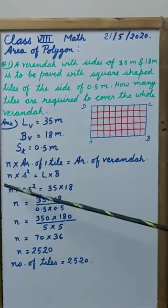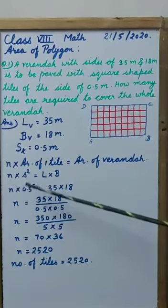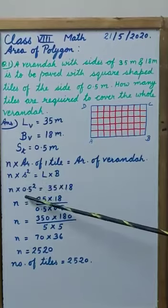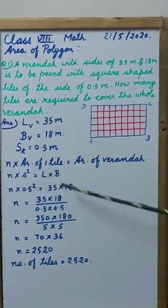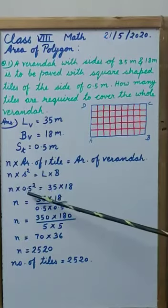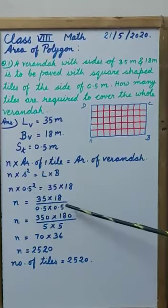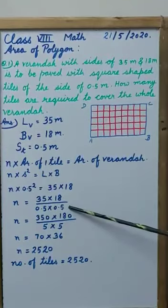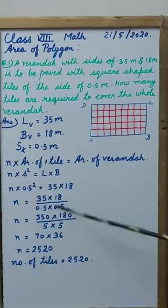N, we don't know the number of tiles, into s squared. S is 0.5 squared equal to L 35 into B 18. When we transpose in the next step, 0.5 squared, it will come in division by 0.5 into 0.5.